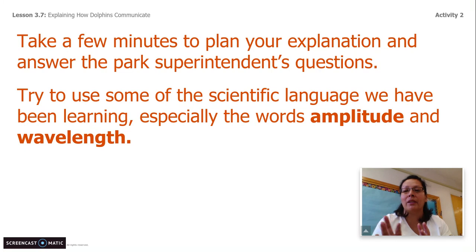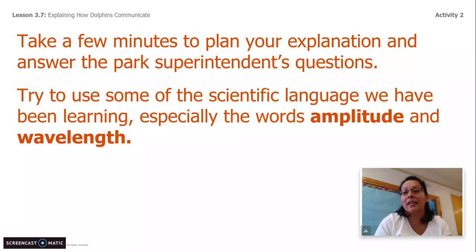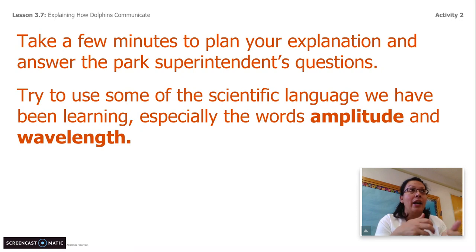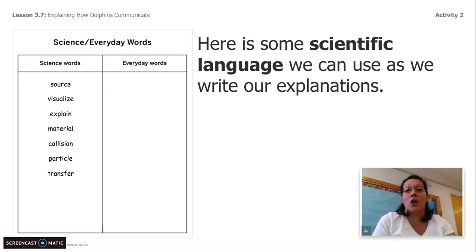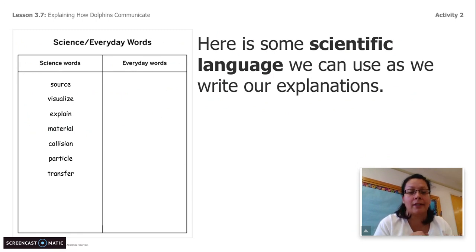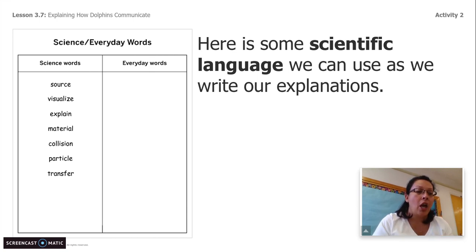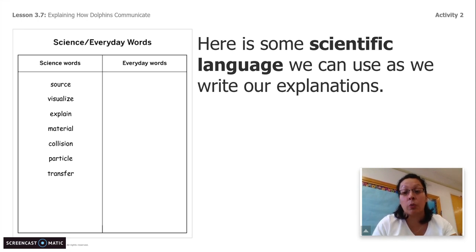At this point, if you want to talk to someone in your house, rehearse it — find your mom, find your brother, find your cousin — write out what you're going to say, then say it out loud and make revisions so that you can answer the questions. Here is some scientific language we have been using throughout our units: source, visualize, explain, material, collision, particle, and transfer. We can also refer to key concepts and vocabulary we've used throughout the unit to help us use scientific language when we write back.